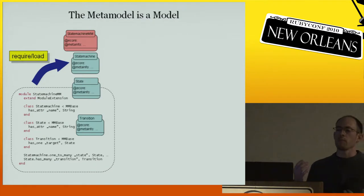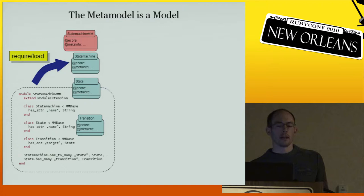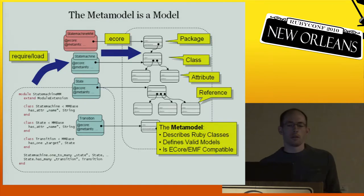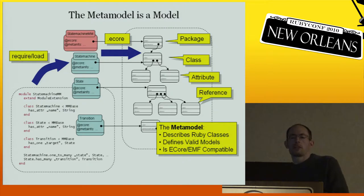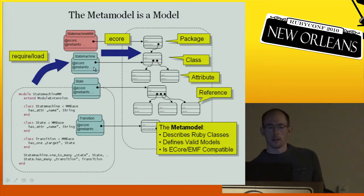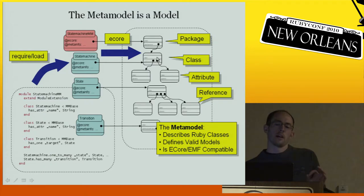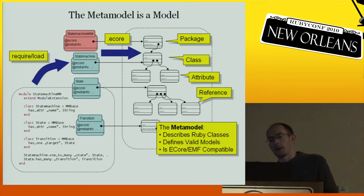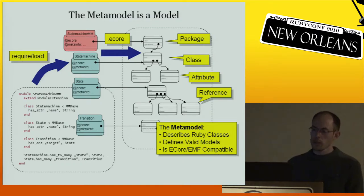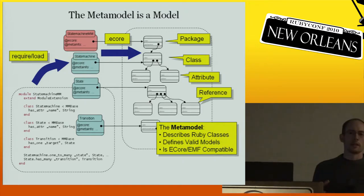There is another model which can be accessed by calling a method called eCore. You can call eCore on a Ruby class object, and you will get a new object describing that class. For example, if you call it on the StateMachine object, this model element will tell you it's named StateMachine and has child elements for each reference. You can look up the references, check the type of the reference, the name, whether it's bidirectional or not. So what we have is a model which describes the meta information — and that's why it's called the metamodel.